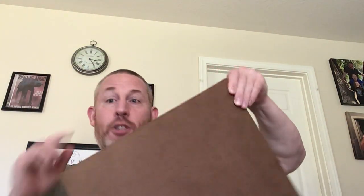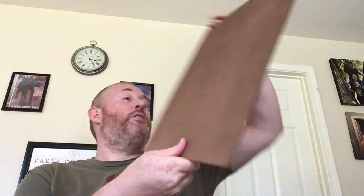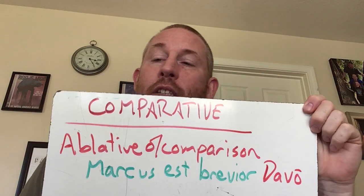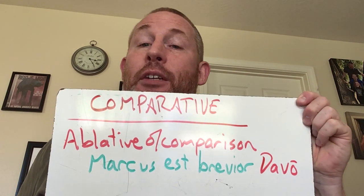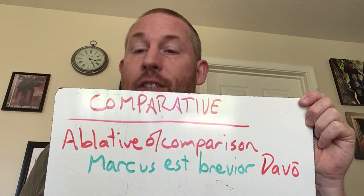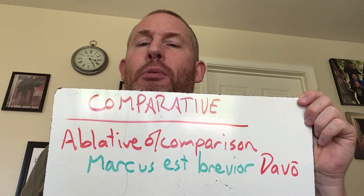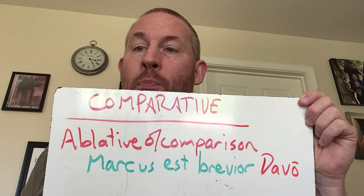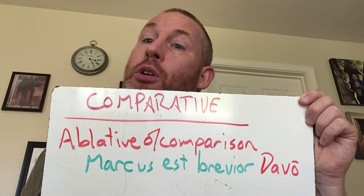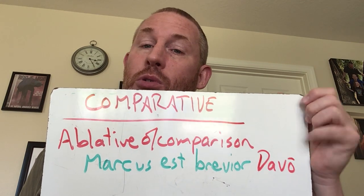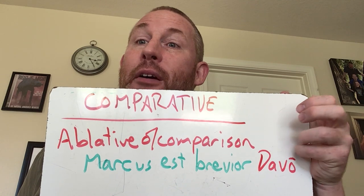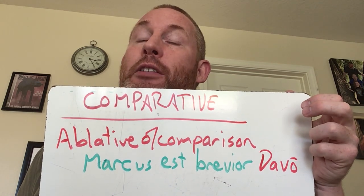Alright, you've had time to copy that down. So let's talk about the grammar of it all. There are two ways to use the comparative in a Latin sentence. The first way is the ablative of comparison. So Marcus est brevior Davo — Marcus is shorter than Davus. That's the ablative of comparison. Now you have another ablative — congratulations.